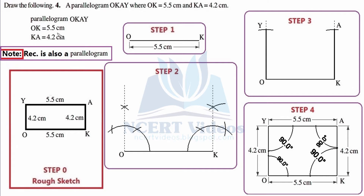By default, a parallelogram appears as a tilted figure, but we need not go a complex way. We already know a geometrical figure called a rectangle, which is also a parallelogram. So we note: rectangle is also a parallelogram. In our rough sketch we use a rectangle, keeping in mind one side should be greater than the other. We mark vertices as O, K, A, Y. OK is 5.5 cm, so the opposite side is also 5.5 cm. KA is 4.2 cm, so YO is also 4.2 cm. All internal angles are 90 degrees and opposite sides are parallel and equal.